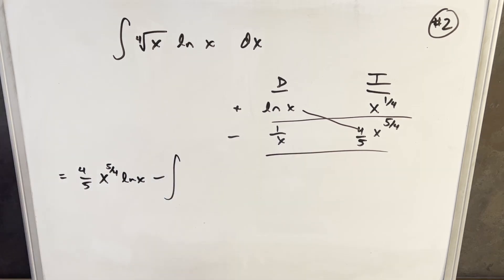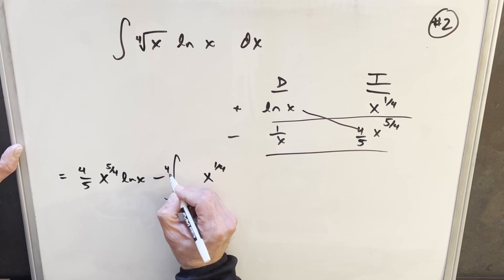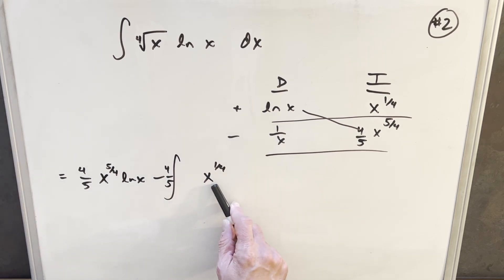Then what I'm going to do, but when I rewrite this, dividing x into x to the five-fourths, it's just going to give us x to the one-fourth. I'll bring this four-fifths up front here. And then when we integrate this, we already know what this is, because we just did it, right? So our integral is just four-fifths x to the five-fourths.